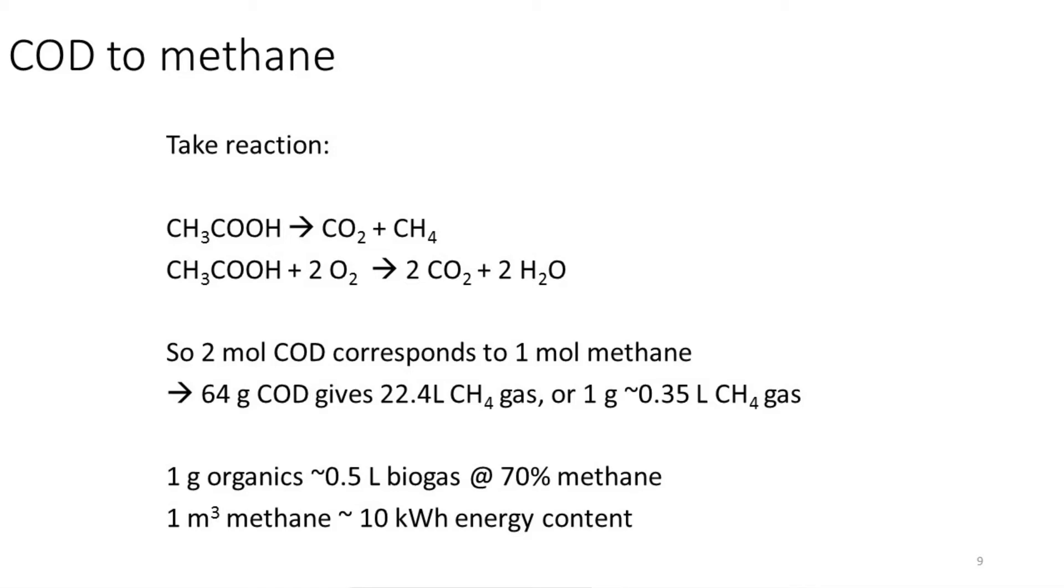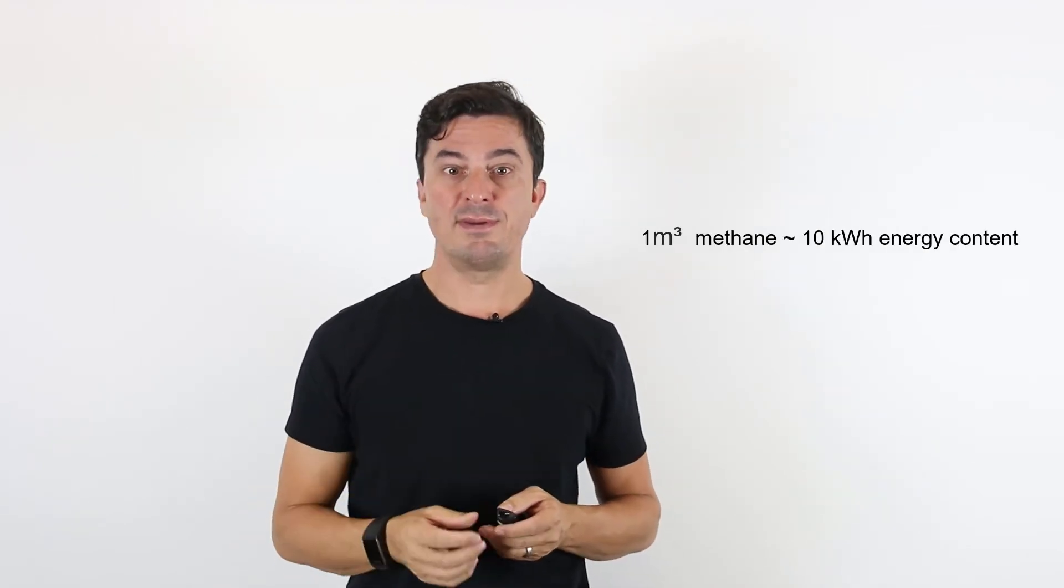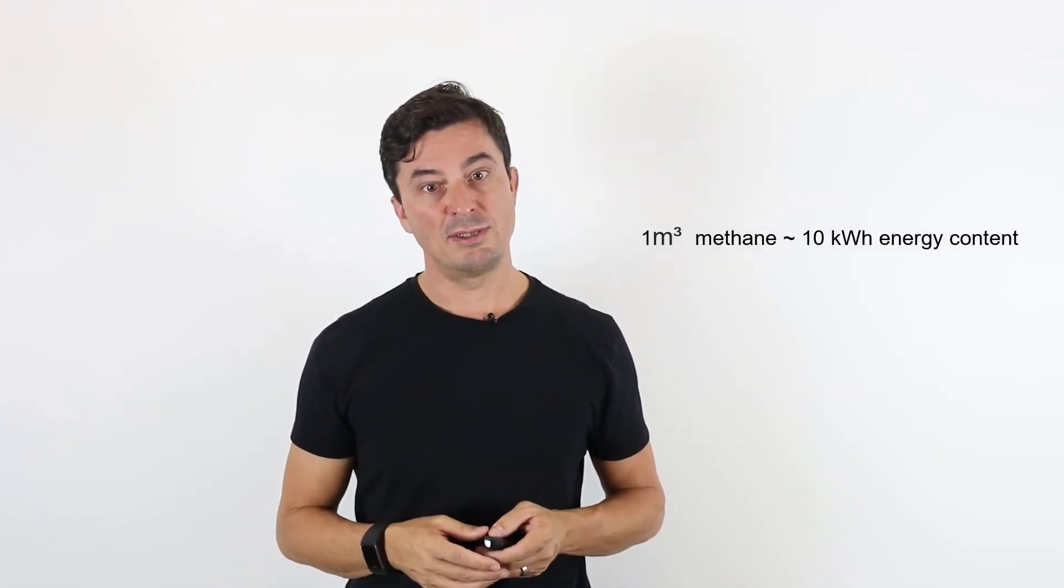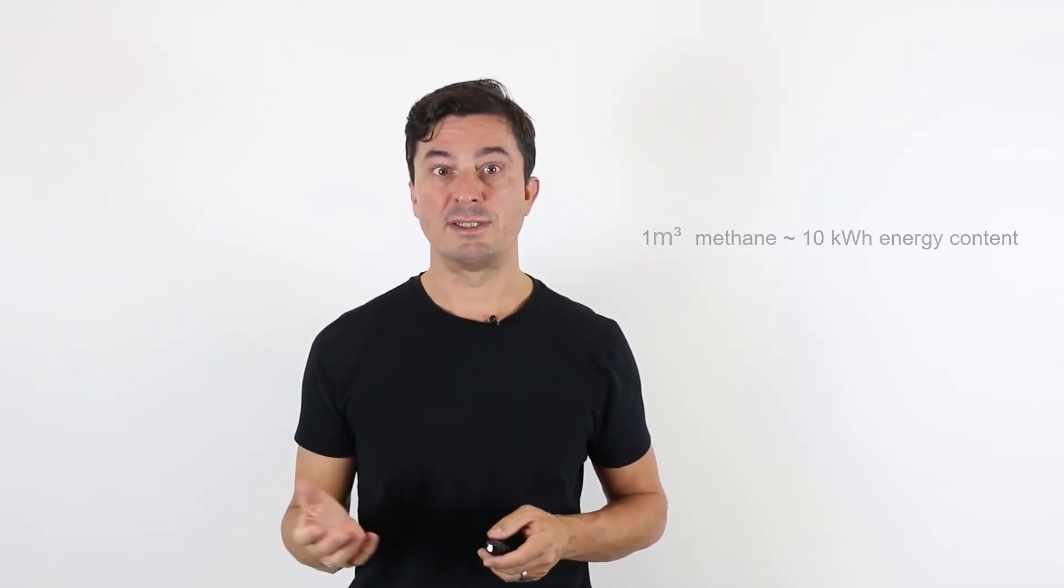So you can say a gram of organics at 70% methane, the rest is CO2, will give you about half a liter of biogas, or a kilogram of organics will give you half a cubic meter of biogas. So these are quite large volumes if you think that an aerobic digester is typically converting tons of organic matter on a day. And, to remind you, a cubic meter of the methane, pure methane, has about 10 kilowatt hour of energy content that you can harvest as electricity or as heat.